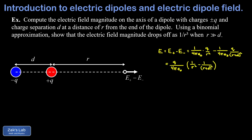Now we think about the large distance approximation. A naive approach is to say that if r is much bigger than d, then r plus d is approximately equal to r, making d negligible. Unfortunately, that gives us one over r squared minus one over r squared, which is zero — all we're saying is that far from the dipole the field is approximately zero. While true, it's not useful because what we want is the r dependence of the electric field as we move farther from the dipole. So we need something better, and this is where the binomial approximation enters.